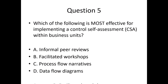Question 5. Which of the following is most effective for implementing a control self-assessment (CSA) within business units? A. Informal peer reviews. B. Facilitated workshops. C. Process flow narratives. D. Data flow diagrams.